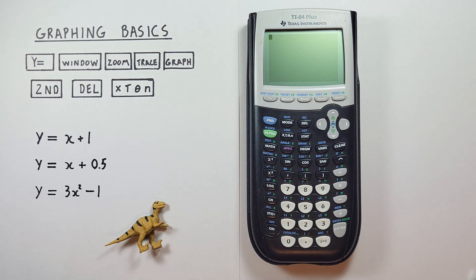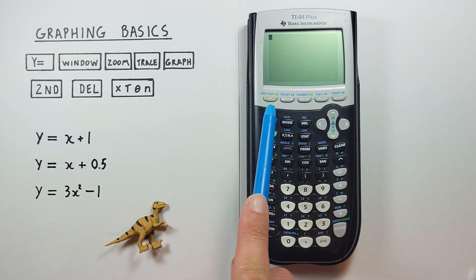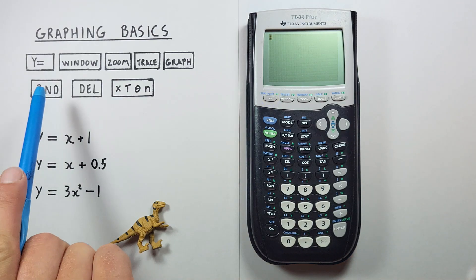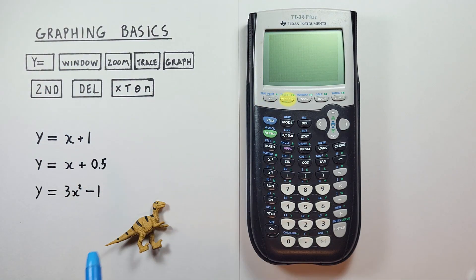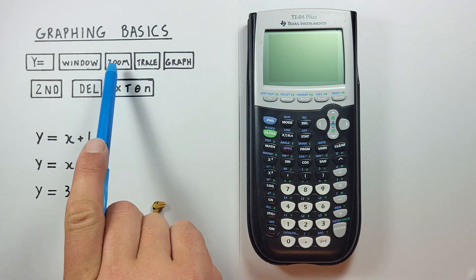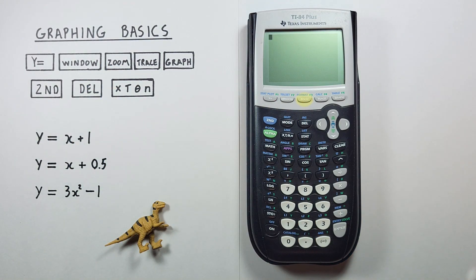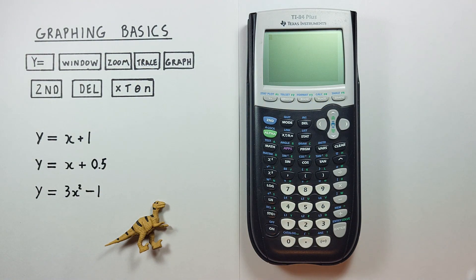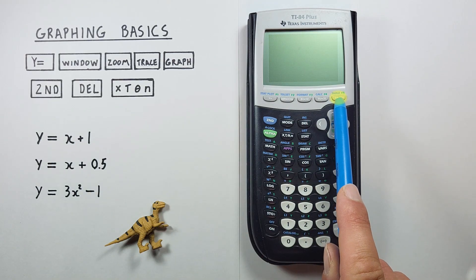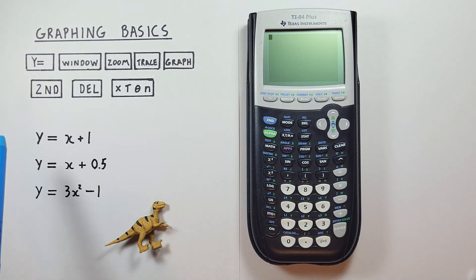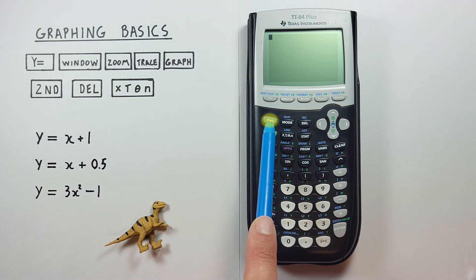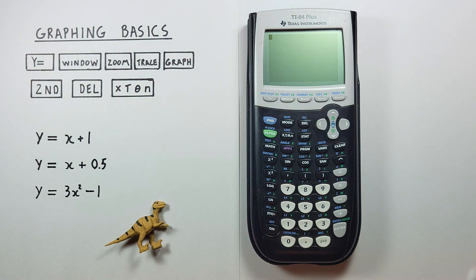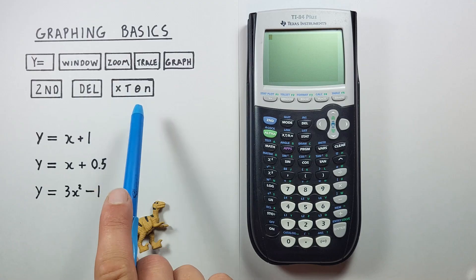To do this, we'll use the Y= key, the Window key, the Zoom key, the Trace key, the Graph key, as well as the second key located here in blue, the delete key, and the variable key.